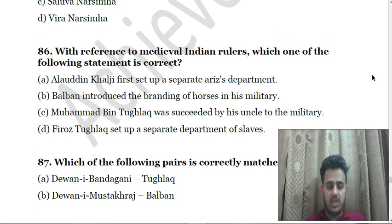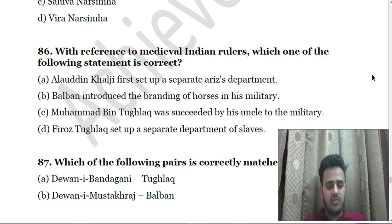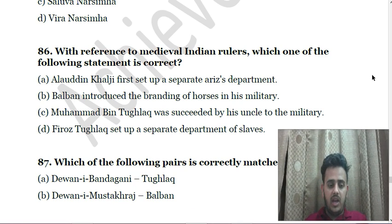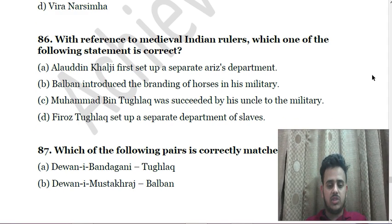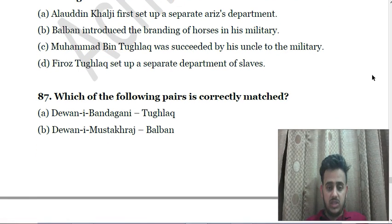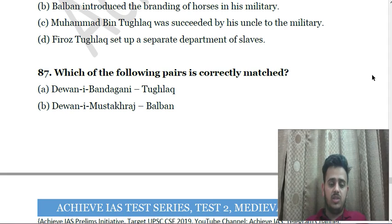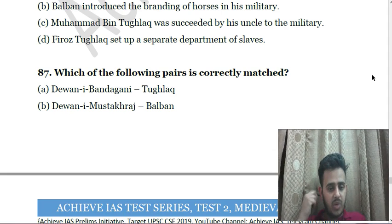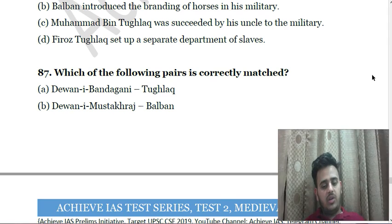Next: Al-Biruni was the contemporary of — A. Balban, B. Mahmud of Ghazni, C. Muhammad Ghori, D. Qutb-ud-din Aibak. Next: Who among the following was the second Portuguese governor in India? A. Vasco da Gama, B. Francisco de Almeida, C. Alfonso de Albuquerque, D. Francisco Xavier. Next: Whose permission was solicited by Albuquerque, the Portuguese governor, to build a fort at Bhatkal? A. Achyuta Raya, B. Krishnadeva Raya, C. Saluva Narsimha, D. Vira Narsimha. Next: With reference to medieval Indian rulers, which statement is correct? A. Alauddin Khalji first set up a separate Diwan-i-Arz department; B. Balban introduced the branding of forces in his military; C. Muhammad bin Tughluq was succeeded by his uncle; D. Firuz Shah Tughlaq set up a separate department of slaves.